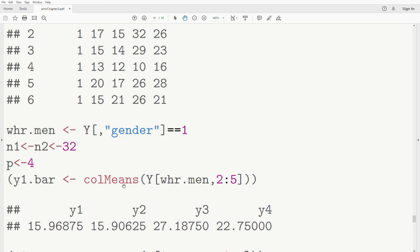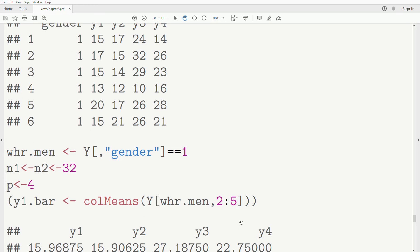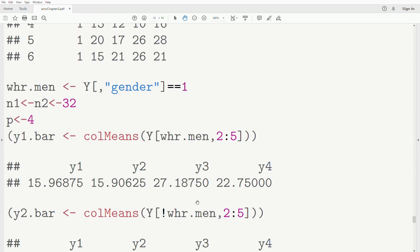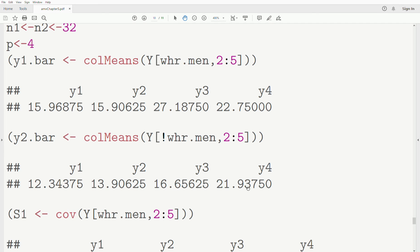We calculate the sample means for population one. Remember, we're doing it for men. We only want columns two, three, four, five. This is it. Then we calculate the sample mean vector for women. That says not women - this is how you do it in R. We want columns two through five. This is the sample mean vector.